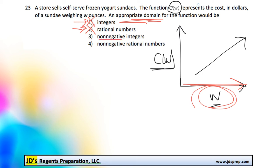So 3 and 4 are both non-negative, so that's a good sign. So it must be either non-negative integers or non-negative rational numbers. Now we've got to think, can the weight of these frozen yogurt sundaes be an integer?